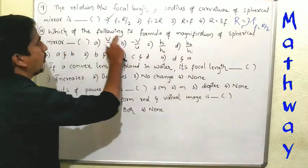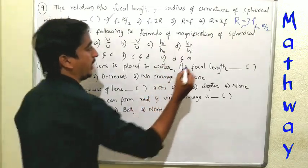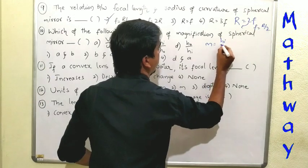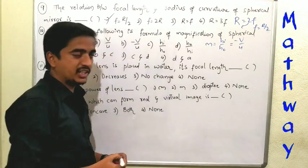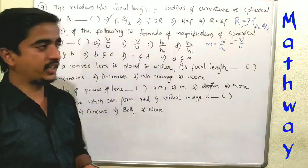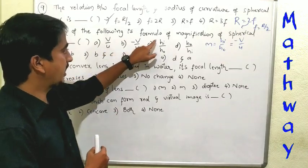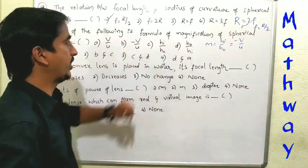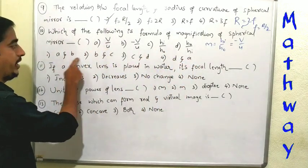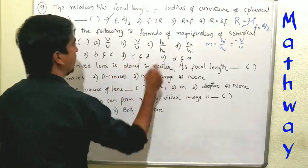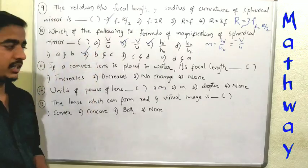Tenth question: which of the following is the formula for magnification of a spherical mirror? M equal to HI by HO. We can also write it as minus V by U, where V is the image distance and U is the object distance. Option B is minus V by U and option C is HI by HO. So option B and C are correct. Second option is the correct answer.